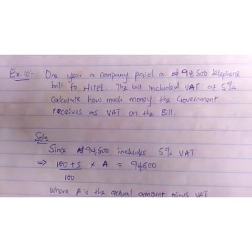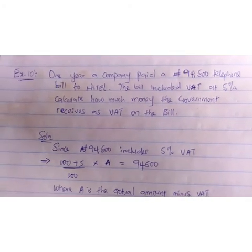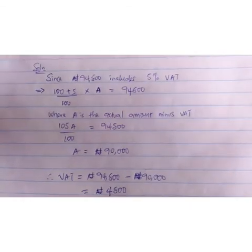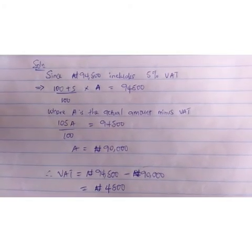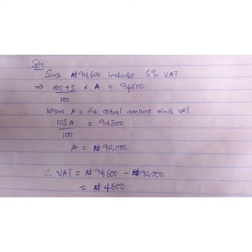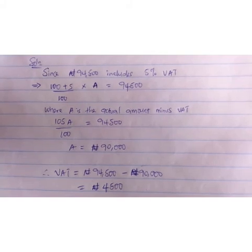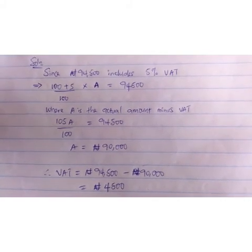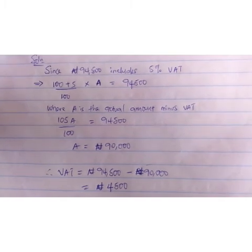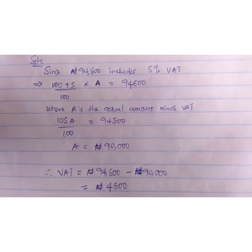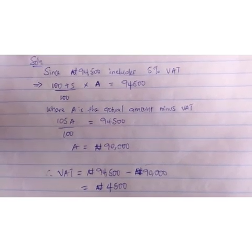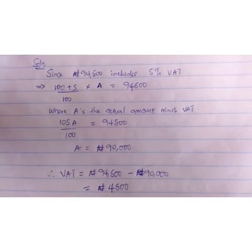Finally, Example 10: One year, a company paid a 94,500 naira telephone bill to NITEL. The bill included VAT of 5%. Calculate how much money the government receives as VAT on the bill. Since 94,500 naira includes 5% VAT, it implies that (100 + 5) over 100 times the amount A equals 94,500 naira, giving us 105A over 100 equals 94,500. Where A represents the actual amount before VAT. After cross-multiplying, A equals 90,000 naira. The VAT is therefore 94,500 minus 90,000 naira, which gives us 4,500 naira — the VAT paid to the government.